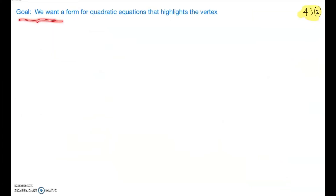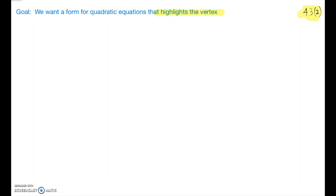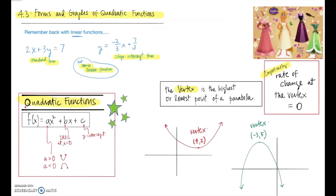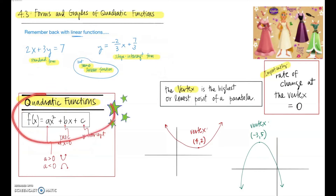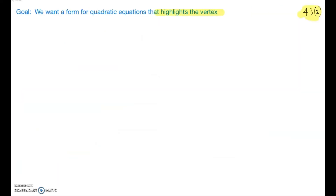Our goal is to find a form for a quadratic equation that will highlight the vertex — one where we can easily read off the vertex. Just like sometimes we have standard form of a linear equation, but also slope-intercept form that highlights slope and intercept, sometimes we want a different form of a quadratic function that highlights the vertex, because that's such an important part.